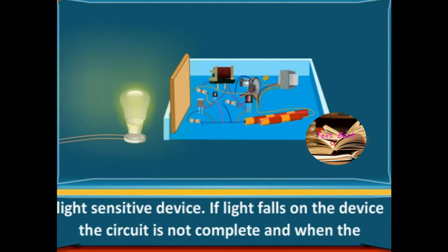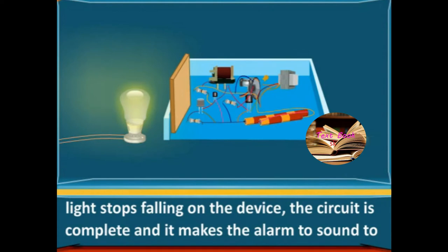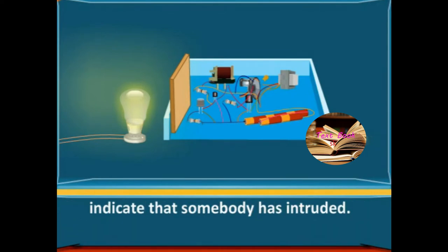If light falls on the device, the circuit is not complete, and when the light stops falling on the device, the circuit is complete and it makes the alarm sound to indicate that somebody has intruded.